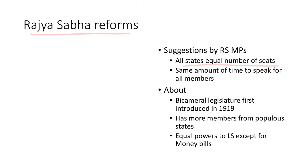What is the Rajya Sabha? The Rajya Sabha is the upper house of the Parliament, with the Lok Sabha being the lower house. The U.S. equivalent would be the U.S. Senate, where all states have equal representation. These are the key reforms being discussed for the Rajya Sabha.